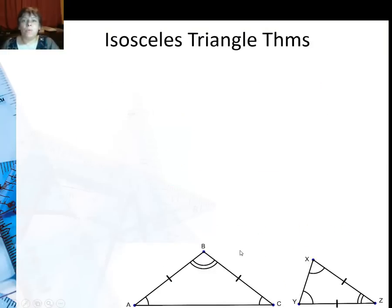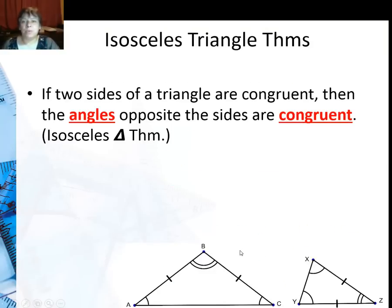So one of the triangle theorems we run across: if two sides of a triangle are congruent, then the angles opposite the sides are congruent. Now this makes sense based on what we did with angles opposite sides. Remember the largest angle is opposite the largest side and the smallest angle is opposite the smallest side. Well if the sides are the same, then the angles should be the same.